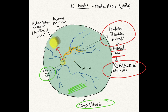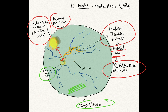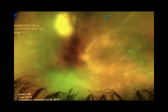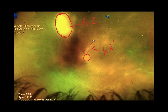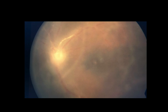Around two disc diameters supero-nasally, there was a raised lesion with fluffy margins, obscuring underlying vessels, whitish-yellow in color — suggestive of an active retinochoroiditis lesion. Just adjacent to this active lesion, there was a retinochoroiditis scar. So we have vitritis, vasculitis, retinitis with choroiditis, and an old scar. The fundus picture clearly demonstrates the retinochoroiditis lesion and the Kyrieleis arteritis with arterial exudative sheathing.